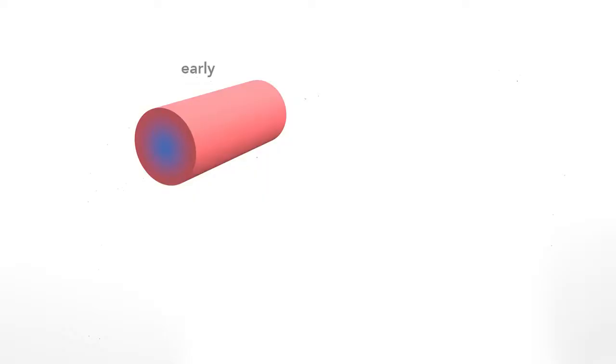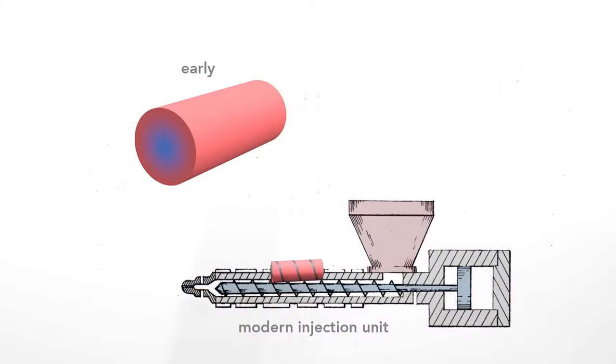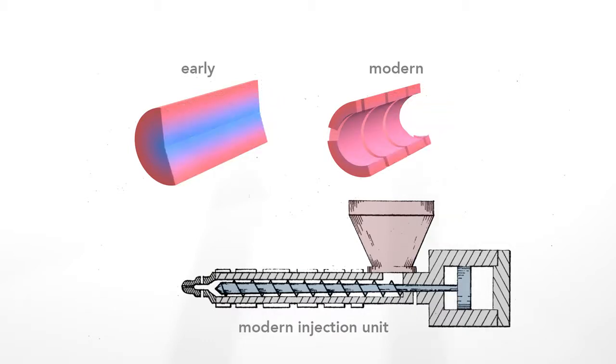In the earlier plunger-style machines, plastic filled completely the cylindrical barrel. But as I showed you, the plastic was not at a uniform temperature. The reciprocating screw overcomes this in three ways. First, in modern units, the plastic fills only the space around the shaft of the screw. This eliminates the cooler central region, leaving a thinner, evenly heated layer of plastic.